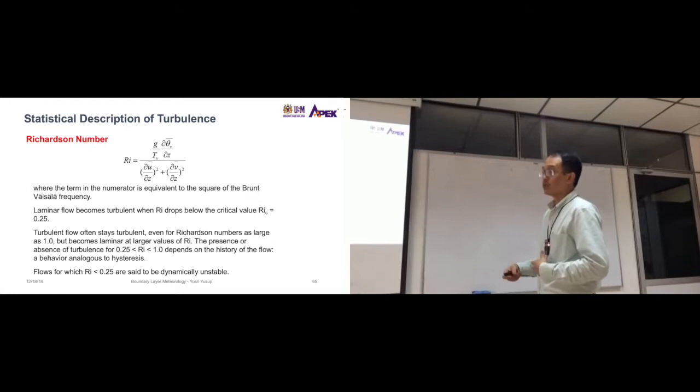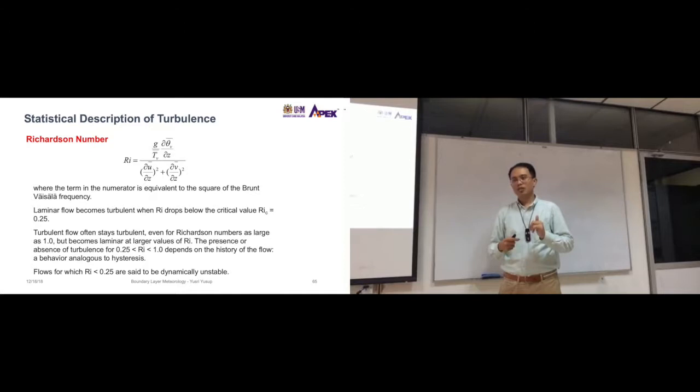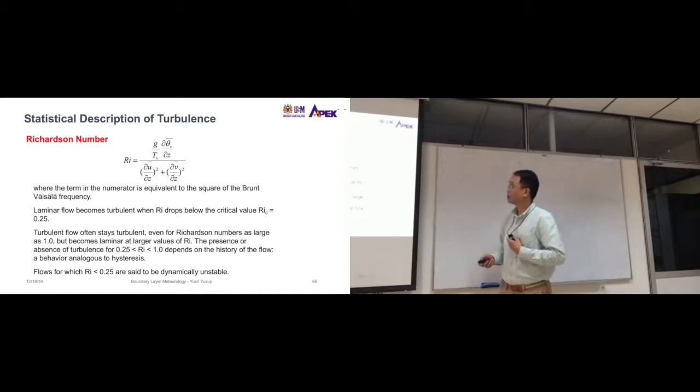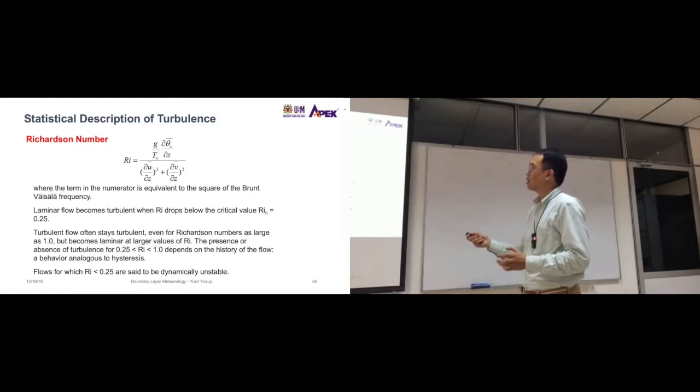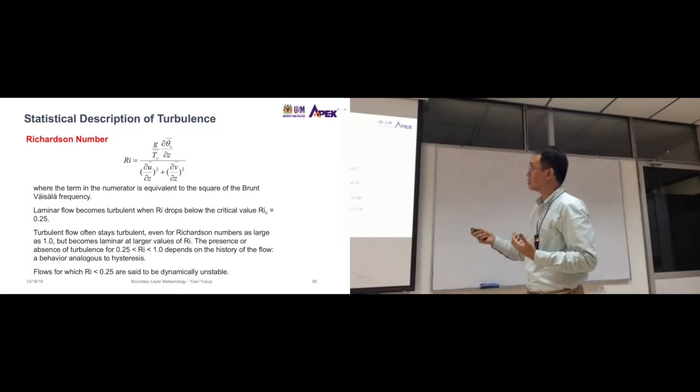Now, we rarely calculate Richardson number because you will need to get the temperature profile. Let's say you want to calculate that. It looks complicated to calculate it, but it's not that difficult. Just follow whatever that's needed here. For example, G is a constant, 9.80, depending on the units that you use. T is Kelvin or degrees Celsius. Del theta V is just the temperature difference at two heights in Kelvin or degrees Celsius. If you use here degrees Celsius, this one also has to be degrees Celsius. If you use here Kelvin, this one also has to be Kelvin.